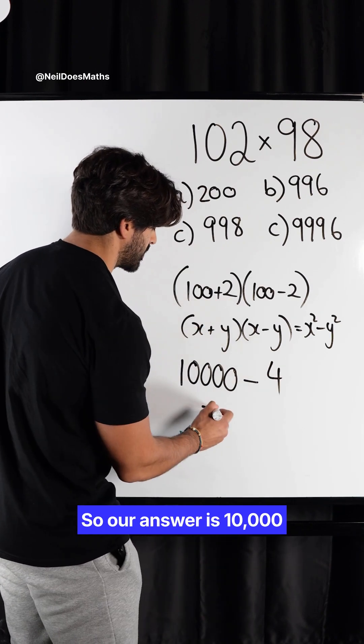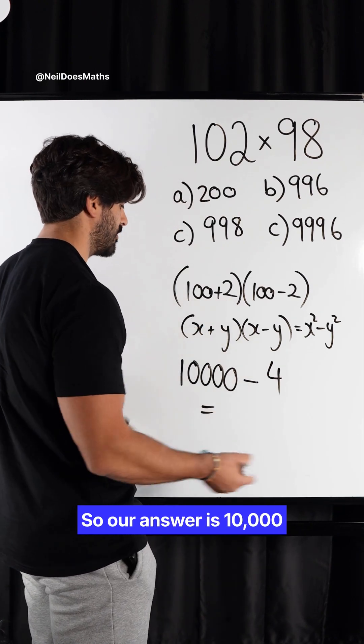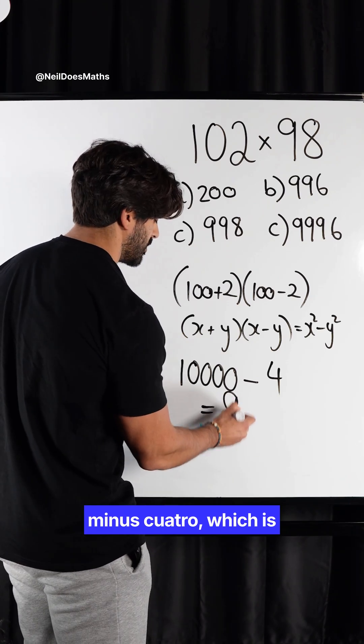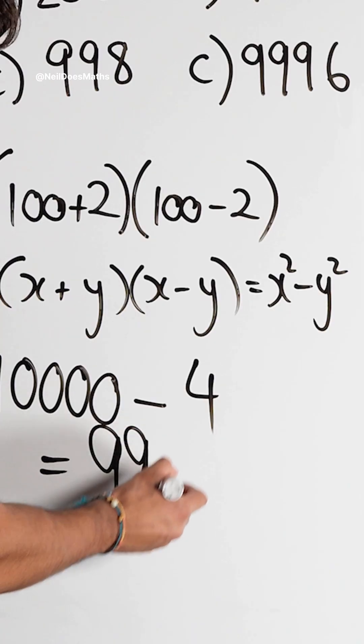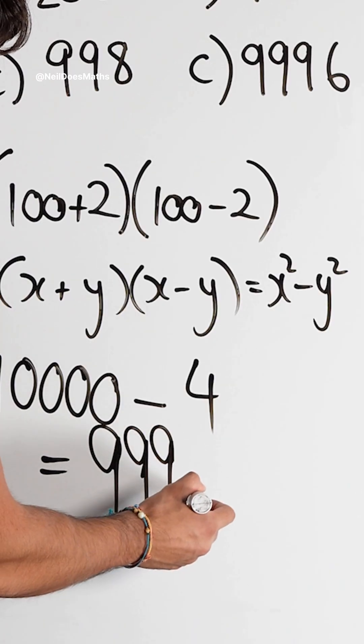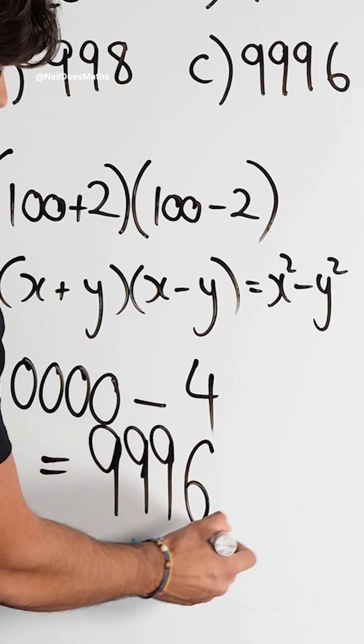So our answer is 10,000 minus 4, which is 9,996 — noin, noin, noin, noin upside down.